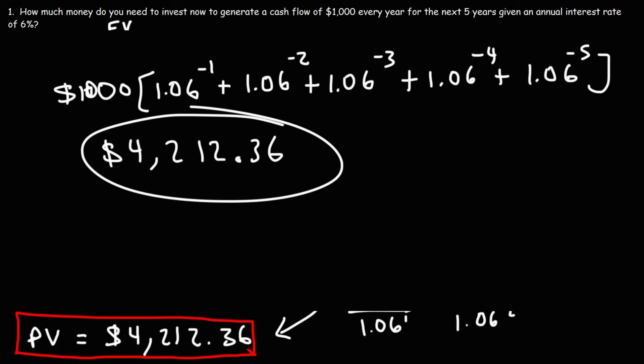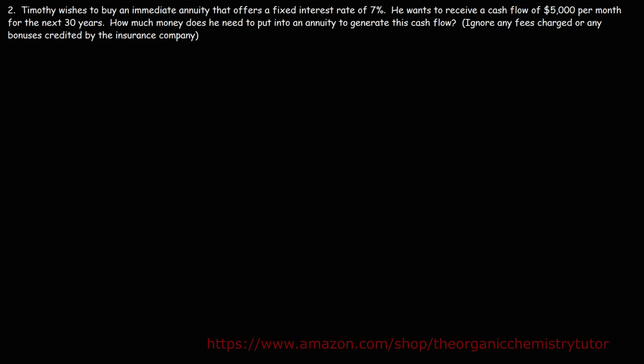So now you have three different ways to calculate the present value of an annuity. Let's work on another example problem. Timothy wishes to buy an immediate annuity that offers a fixed interest rate of 7%. He wants to receive a cash flow of $5,000 per month for the next 30 years. How much money does he need to put into the annuity? We'll ignore any fees or bonuses from the insurance company for now.